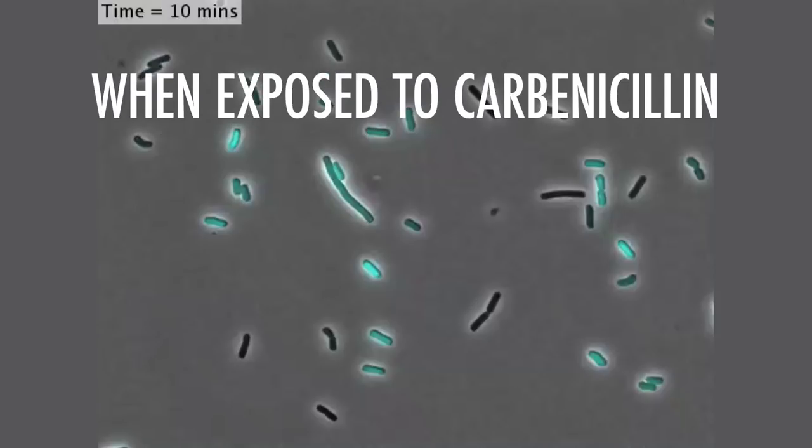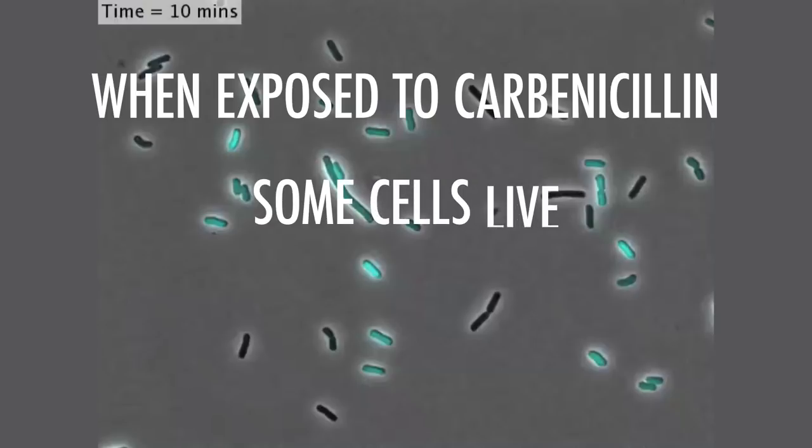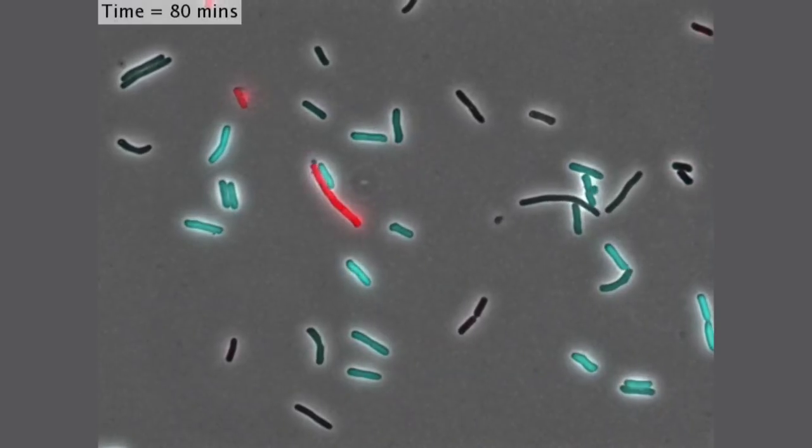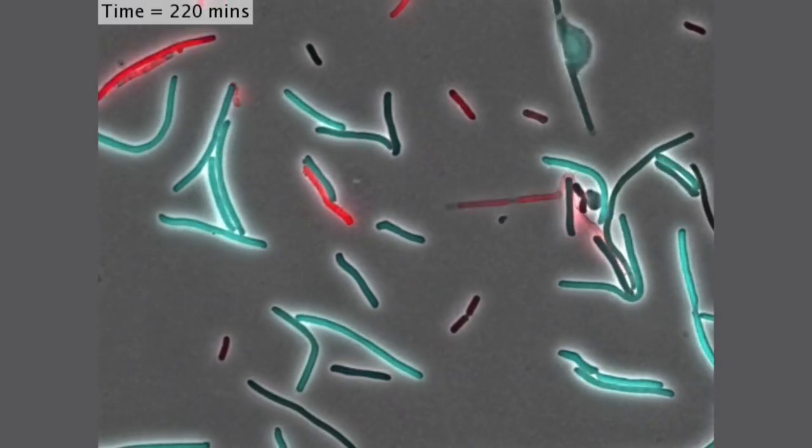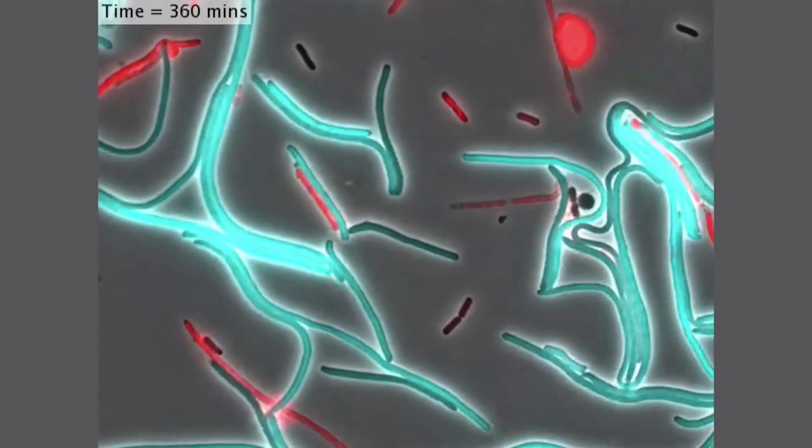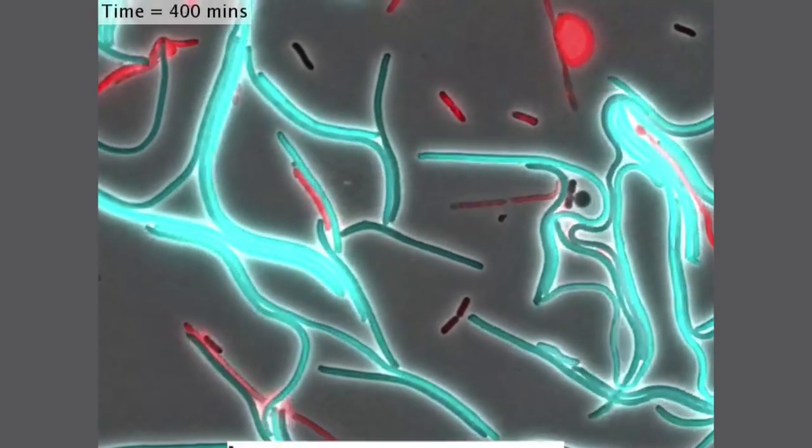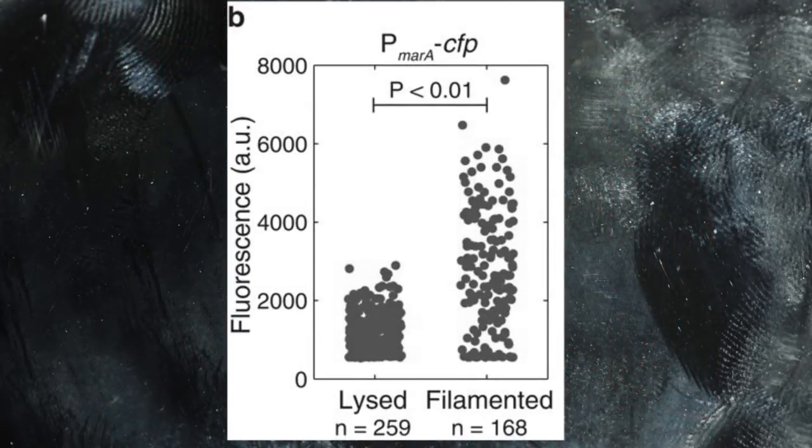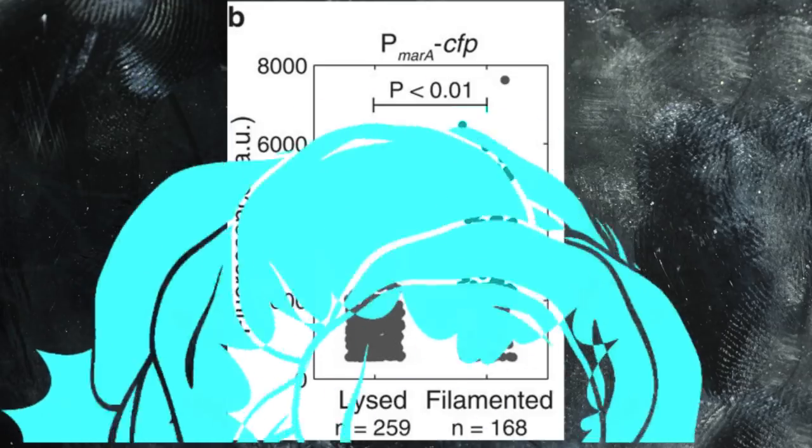When exposed to carbenicillin, some cells live, and some cells die. It can appear to be random why a cell lives or dies. When in reality, we know that something about the underlying stochastic gene expression dictates whether the cell lives or dies in carbenicillin. Looking at hundreds of cells shows that higher levels of MarA correlate with a higher survivorship. Therefore, these random differences in MarA produce functional results.